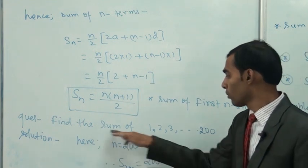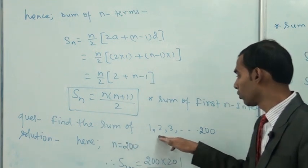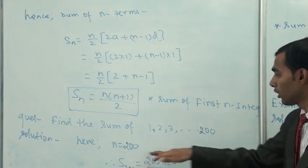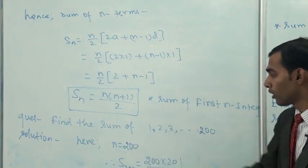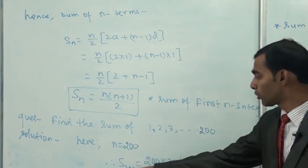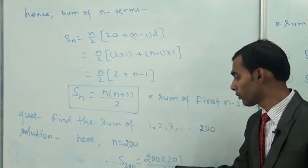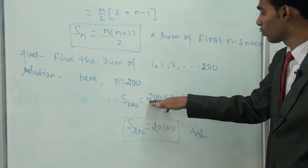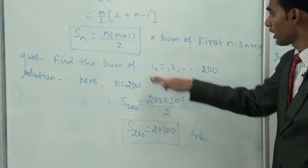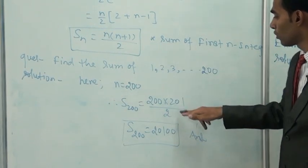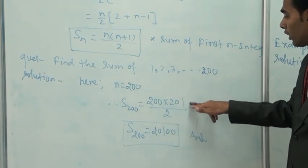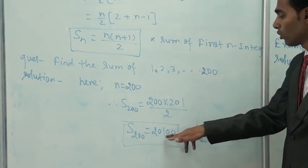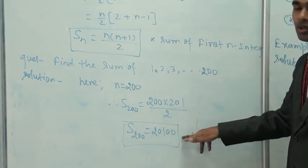Question: Find the sum of 1 + 2 + 3 + ... up to 200. Here n = 200. So the sum of 200 terms = n(n+1)/2 = 200 × 201 / 2 = 20100.